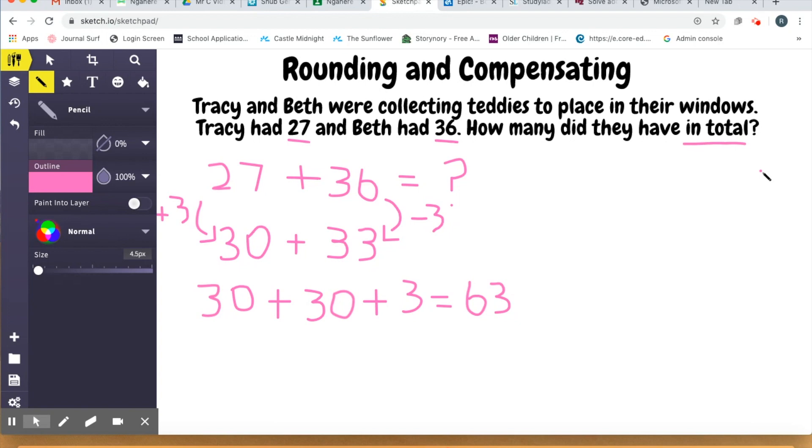Now with rounding and compensating you might think of this as almost making tidy numbers. So I've got my 27 and my 36 is going to make my answer. Now 27 is not a tidy number but it is close to one. A tidy number is basically any number that ends in a five or a zero. I mean any number 10, 20, 30, 40, 100, 170, 330, they all end with zeros. They're really easy numbers to work with. Now I need to make sure when I'm doing addition that I keep the total number of objects, in this case teddies, the same. Otherwise my answer isn't going to be correct.